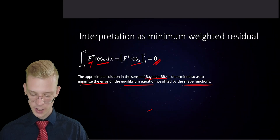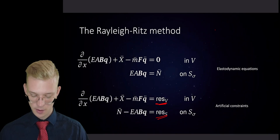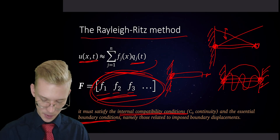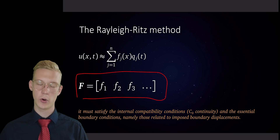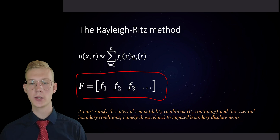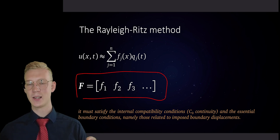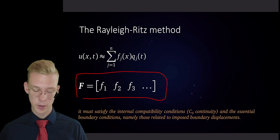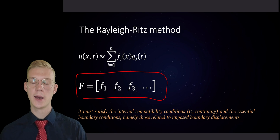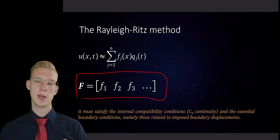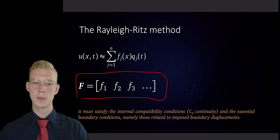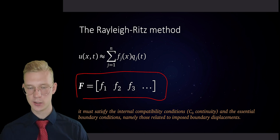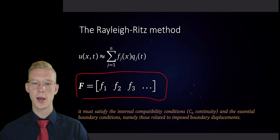I hope this video gave you a better understanding of how we work with the Rayleigh-Ritz method. To summarize: we propose a solution for our system, insert it into our equations of motion, get some residual forces that make our system stiffer, then apply the principle of virtual work to eliminate those forces and obtain mass and stiffness matrices. We then find the eigenfrequencies, which are always higher than those from the analytical solution. If you have any questions, feel free to ask them in the comments down below. Thank you very much for your attention and I'll see you next time.